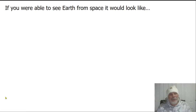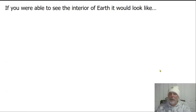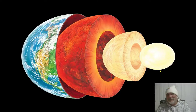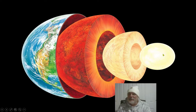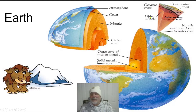Now if we were to take a look at the Earth from space, it's going to look like this — you can see the North American continent here, the South American continent here. And if you're able to see the interior of the Earth, it would look something like this, where you have layers. You can see the solid metal inner core, the molten metal outer core, what's called the mantle, and the crust. Even the upper mantle and crust are broken into smaller pieces and layers.